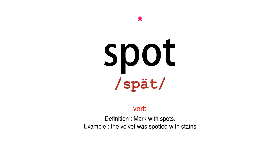Verb Definition – mark with spots. Example – the velvet was spotted with stains.